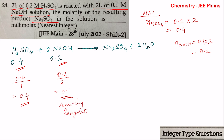The amount of Na₂SO₄ formed depends upon the amount of NaOH present. Number of moles of NaOH divided by its stoichiometric coefficient will be equal to number of moles of Na₂SO₄ formed divided by its stoichiometric coefficient, that is 1. So number of moles of Na₂SO₄ formed is 0.2 divided by 2, which equals 0.1 moles.